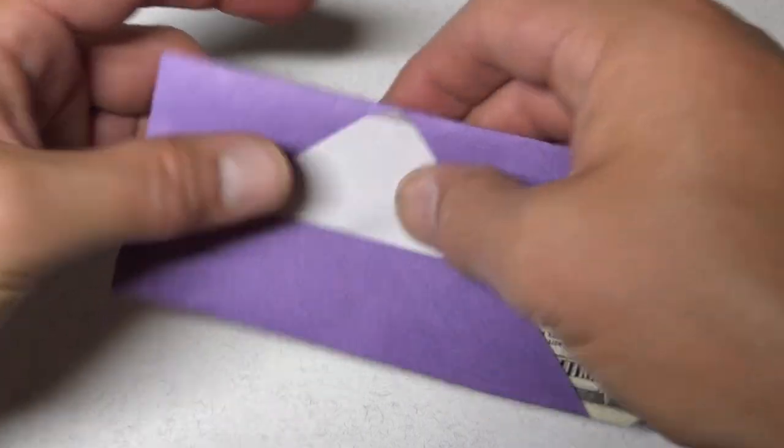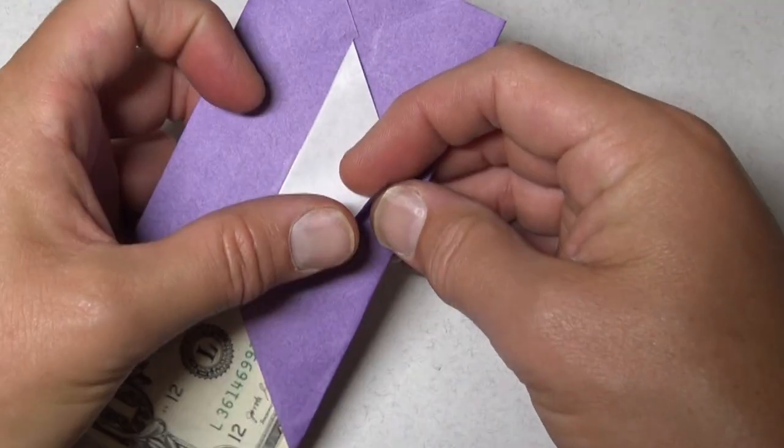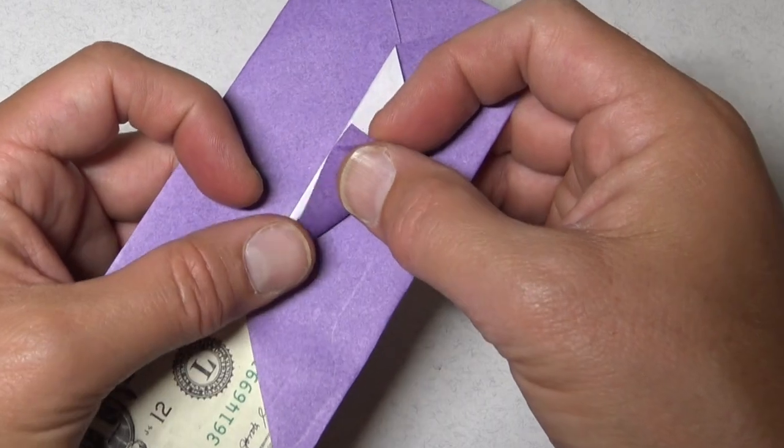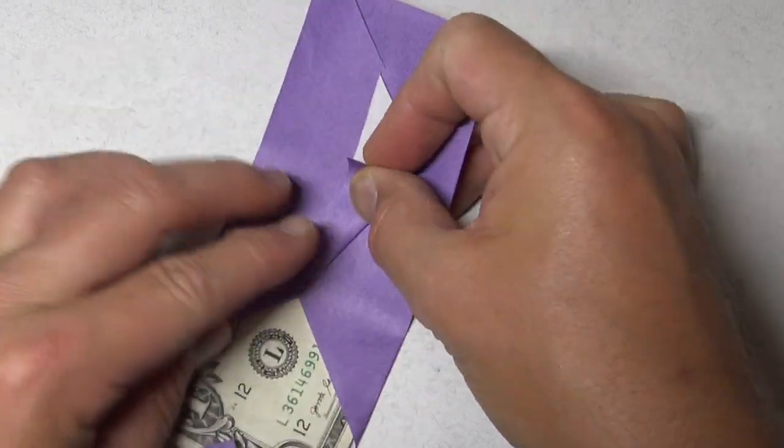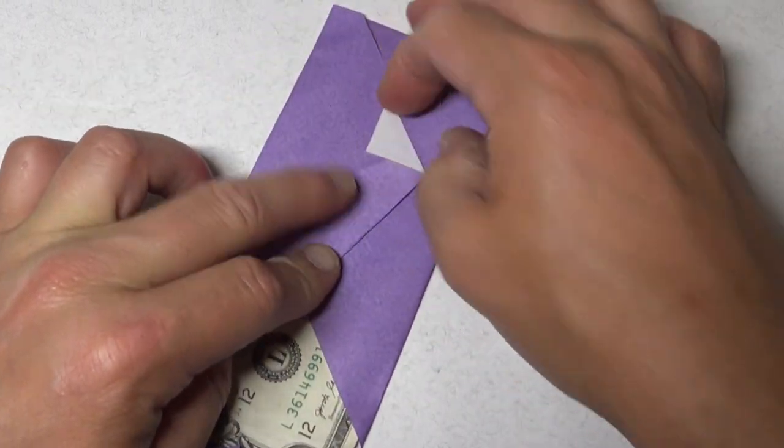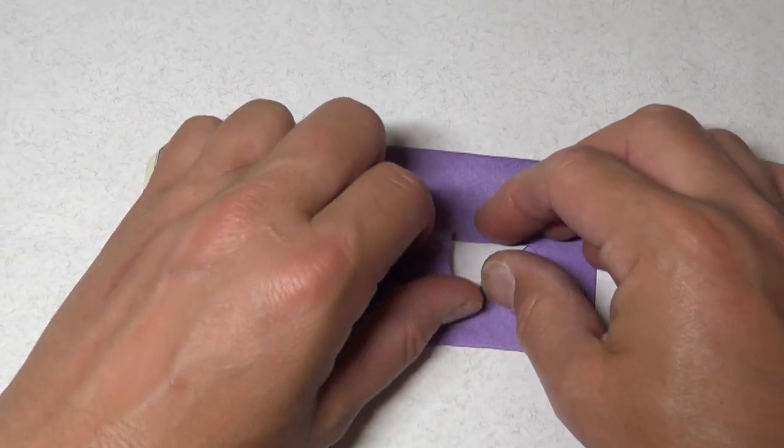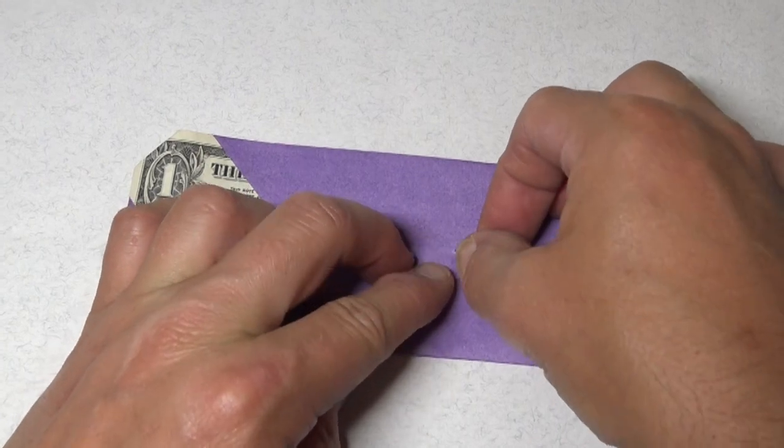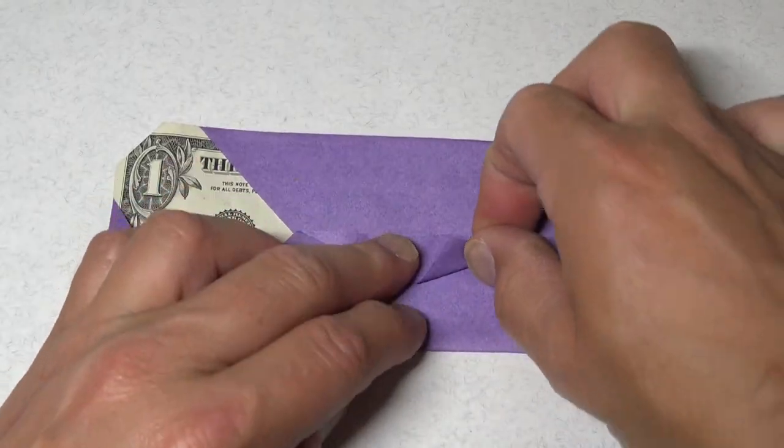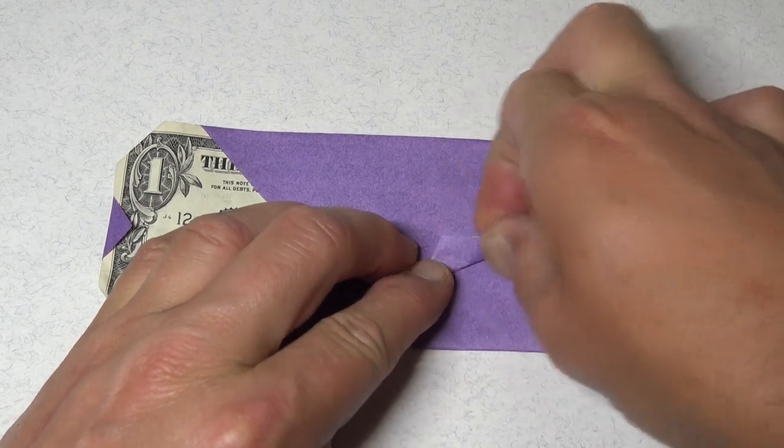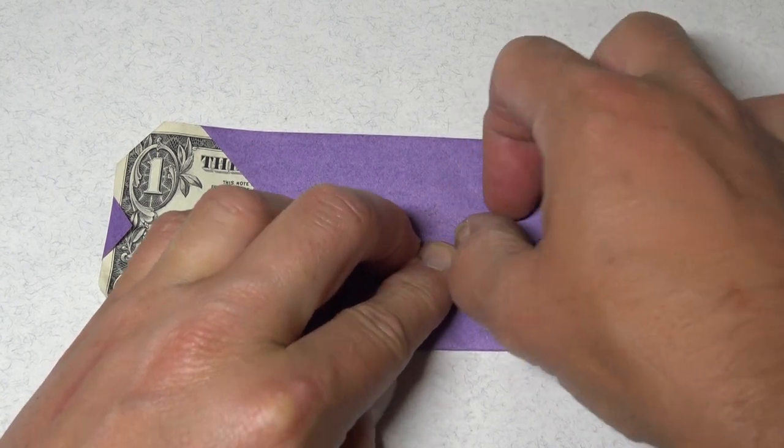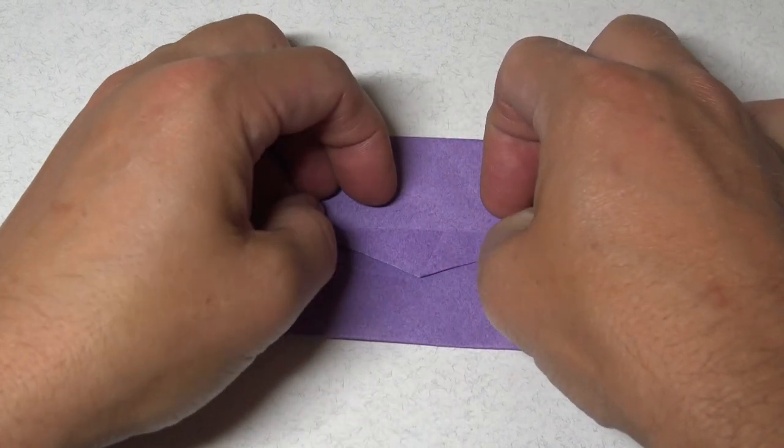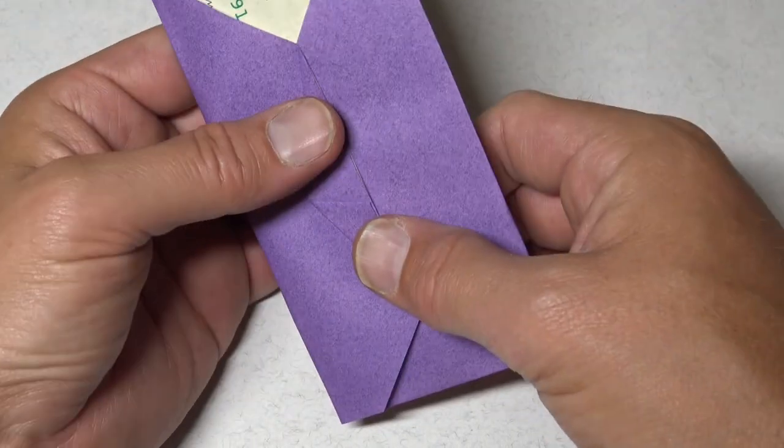Like that. And now fold this edge to here and fold this edge to here. So it's like that.